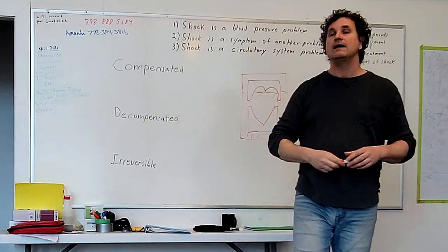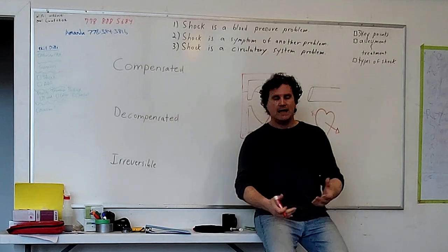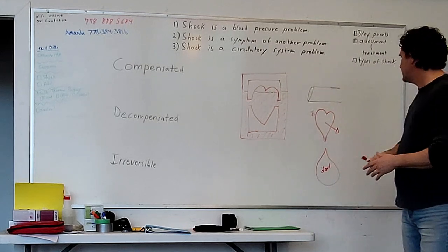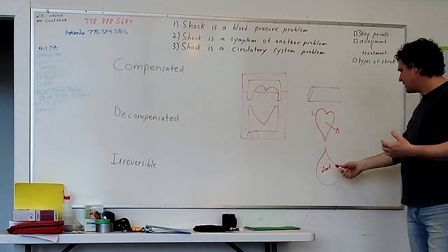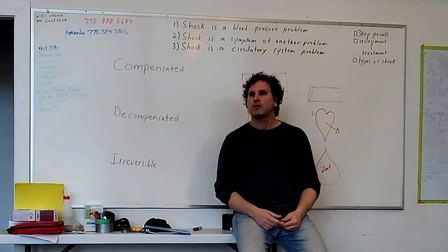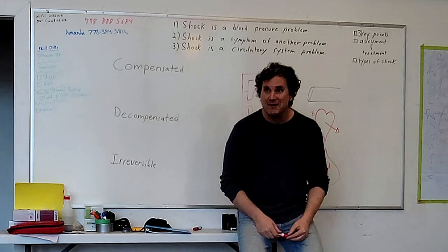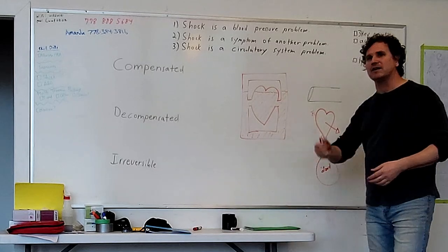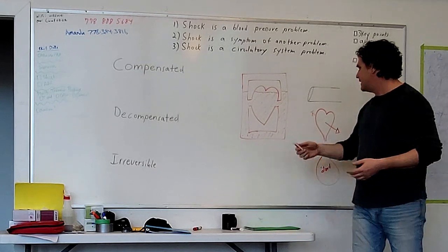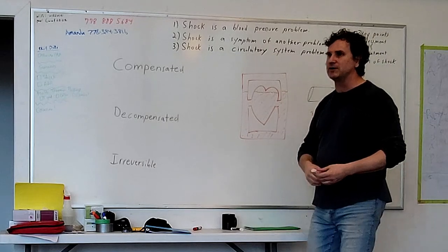One or more of those components failing is going to cause a blood pressure problem. The function of the circulatory system is to maintain blood pressure — it does that by having pipes small enough for the volume of fluid, a pump that moves blood and creates pressure, and enough fluid to create that pressure. Think of an old three-story house: if your pipes aren't good, your pump isn't working, or the well is dry, you can't get water to the shower on the third floor. Arteries are muscular and adjust — they can tighten or dilate.